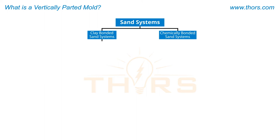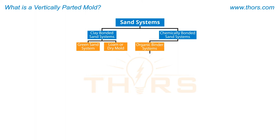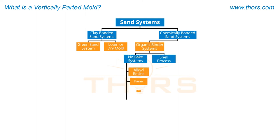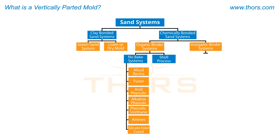Clay bonded sand systems include green sand systems and loam or dry sand molds. Chemically bonded sand systems include organic binder systems like no-bake systems and shell process, and inorganic binder systems like sodium silicate systems and cement mold systems.